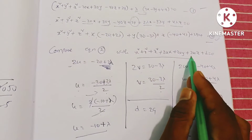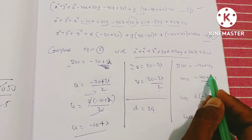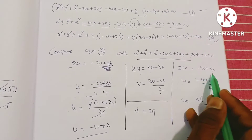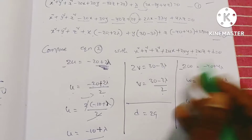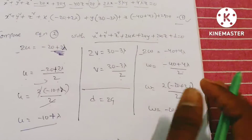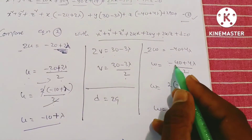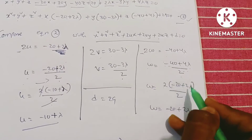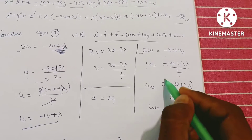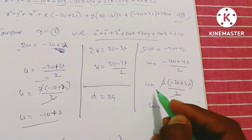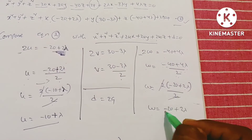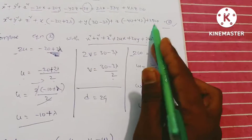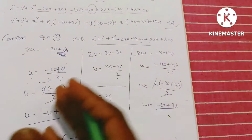Similarly, 2V = 30 − 3λ, so V = (30 − 3λ)/2. And 2W = −40 + 4λ, so W = (−40 + 4λ)/2 = −20 + 2λ. The constant D = 29.